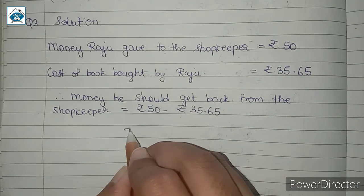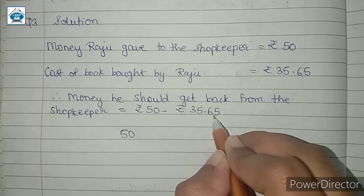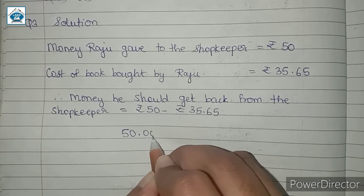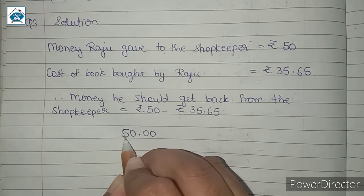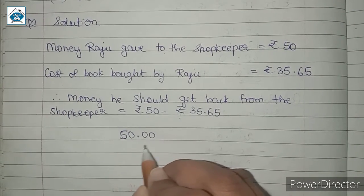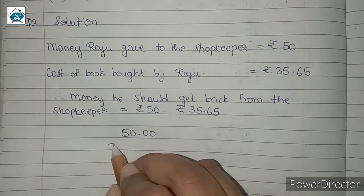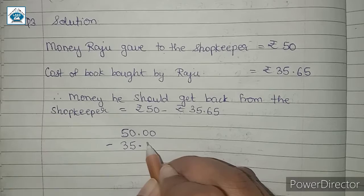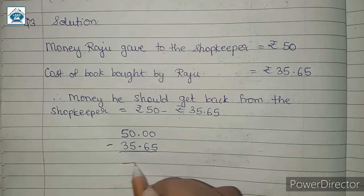For finding out, we will subtract. After the decimal point, we have two digits, so we will write Rs. 50 as Rs. 50.00. So we can write Rs. 50.00 minus Rs. 35.65.